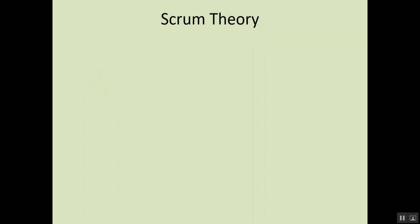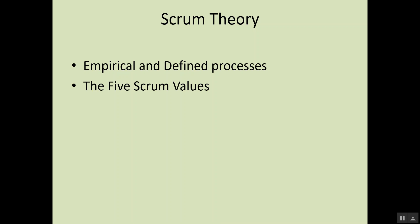Then we move on to Scrum theory. Scrum is based on empirical process — what is empirical process and what are defined processes? What are the three pillars of Scrum theory? Then we will talk about the five Scrum values and examples of Scrum practices based on those values. Then, the applicability of Scrum: in which areas should Scrum be used and in which areas should it not be used.